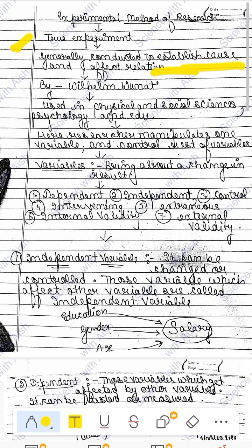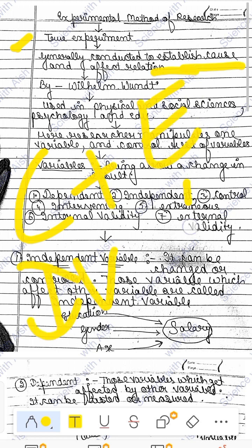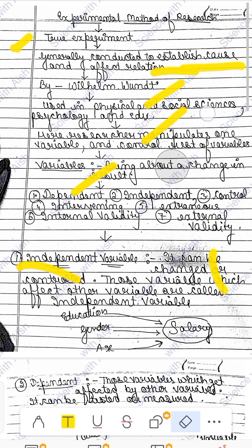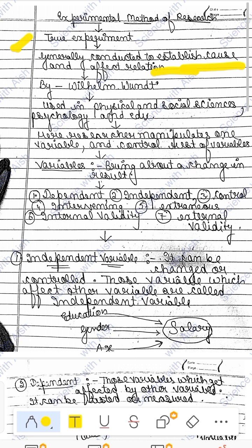Cause plus effect: cause means independent variable and effect means dependent variable. The experimental method establishes the relationship between dependent and independent variables — cause and effect. The experimental method was given by William Wundt. It is mostly used in physical and social sciences, psychology, and education.